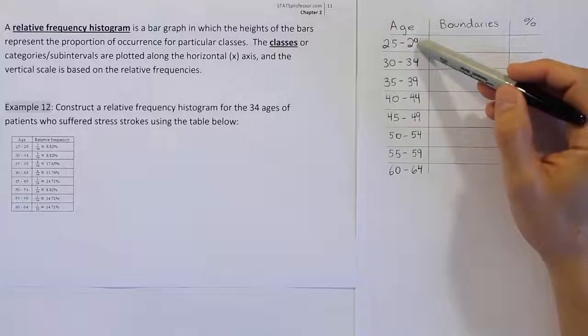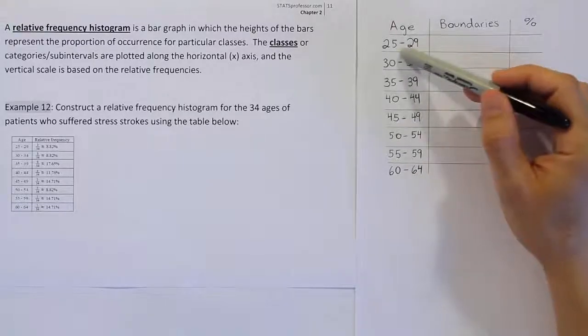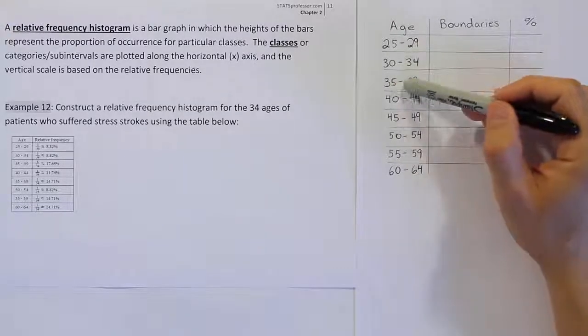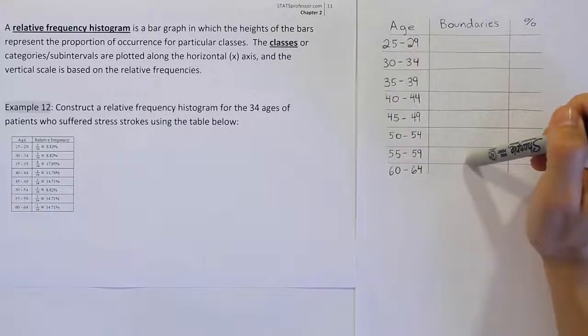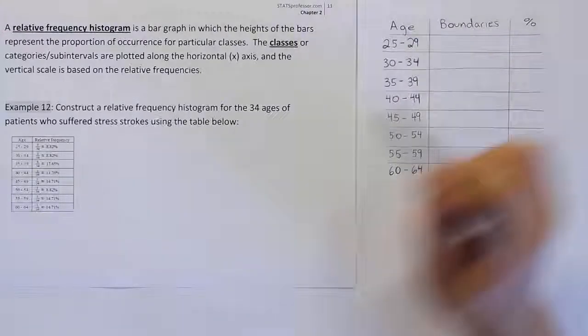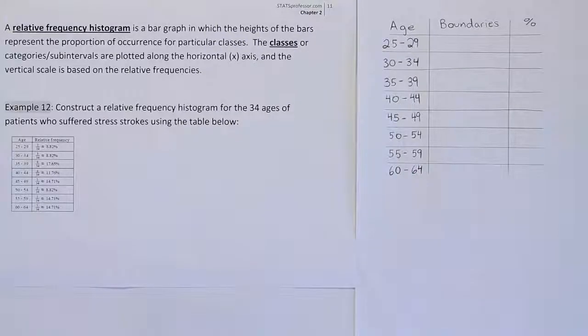We're going to do that by creating class boundaries instead of these given class limits. The class boundaries are essentially, as we've discussed before, the numbers that are right between each of these categories, that are in the middle. We're going to be able to figure out all the boundaries for this table, and then from there we'll take the boundaries and the percentages and create our drawing.